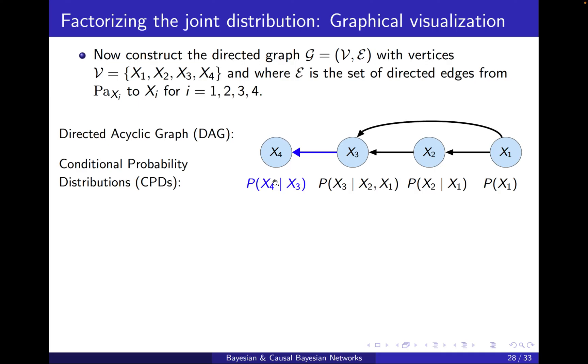we know from the chain rule that if we factorize a joint distribution into the variables, each variable x4, x3, x2, and x1 will appear once in the factorization. Now we have further simplified them, and now we have visualized them.